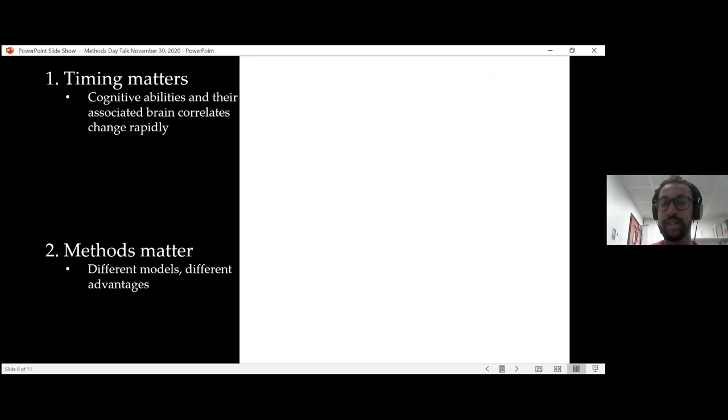And this is important because we know, for example, by numerous studies that timing matters. So both your cognitive abilities and those brain correlates that are associated with them, they change rapidly over time. For example, you have rapid changes to cortical thickness, so you have increased thickness and then subsequent thinning. We also know that depending on what methods you use, they have different advantages and different assumptions.